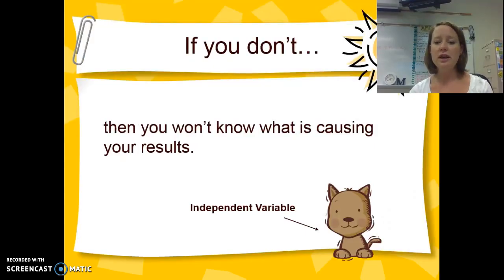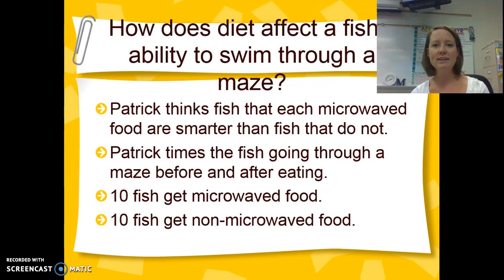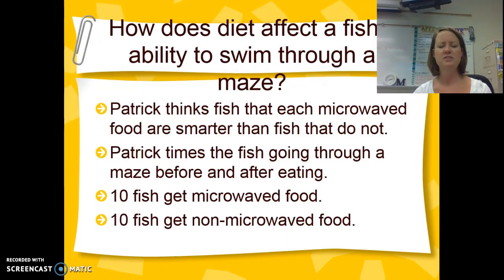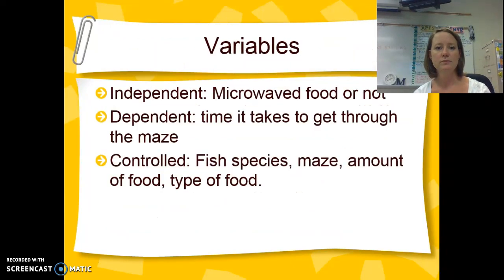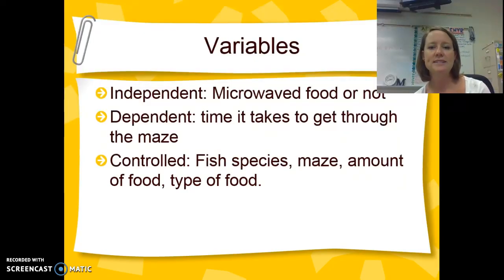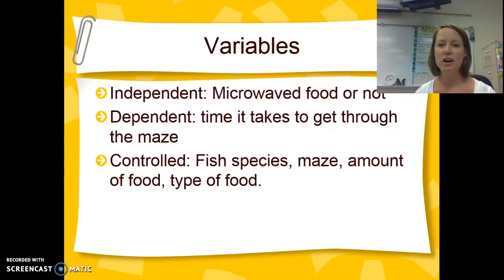If you don't have everything constant aside from your independent variable, you're not going to know what is causing your results. Here's another example: How does diet affect a fish's ability to swim through a maze? Patrick thinks that fish that eat microwaved food are smarter than fish that do not. Patrick times the fish going through a maze before and after eating — ten fish get microwaved food, ten fish get non-microwaved food. The independent variable is whether or not the fish got microwaved food or regular food. The dependent variable is the time it takes to get through the maze, because those are the results we are getting — it depends on whether or not the fish had microwaved food.